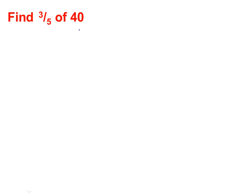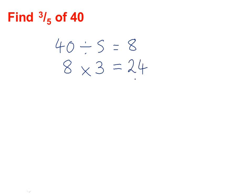What we do is we take our number 40 and we divide it by the bottom of the fraction. So we divide it by 5, that will give us 8. And then we take our 8 and we multiply it by the top of the fraction. The top of the fraction is 3, so 8 times 3 is 24, which is our answer. To find three-fifths of 40, we divide by the bottom number and then we times by the top number.